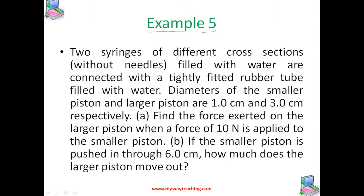We are considering two syringes of different cross sections without needles, filled with water and connected to a tightly fitted rubber tube, which is also filled with water. They have considered two pistons — smaller and larger. Diameters of those two are given and we should find the force exerted on the larger piston when 10 N is applied on the smaller piston. In the second part, if the smaller piston is pushed through 6 cm, how much does the larger piston move out?